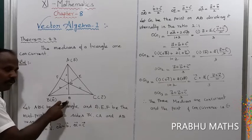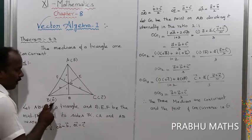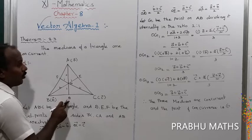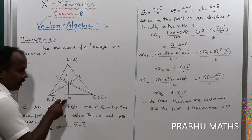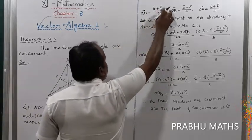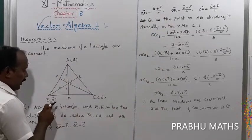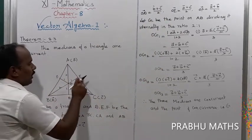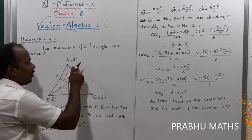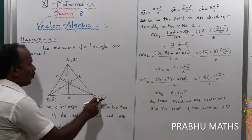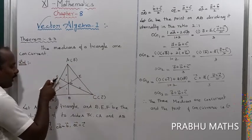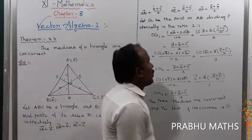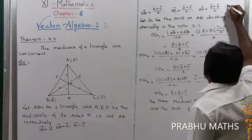Since D is the midpoint of BC, the position vector OD = (B + C) / 2. Similarly, OE = (A + C) / 2, and OF = (A + B) / 2. These are the given values using the midpoint position vector concept.